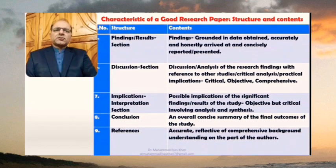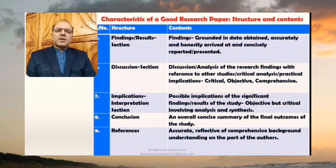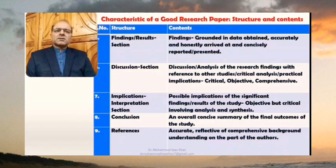The characteristics of a good research paper also include that the findings sections or the result sections are grounded in the data obtained, and they are accurately and honestly arrived at and concisely reported and presented. The findings should come out of the empirical data collected for the research, which is accurately and honestly analyzed.